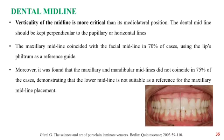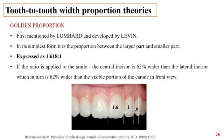The reference points for assessing the midline are the glabella, tip of the nose, tip of the chin, and the philtrum of the lip, which is the most accurate. The various tooth width proportion theories include golden proportion, christian proportion, recurrent aesthetic dental proportion, and special proportions. The golden proportion was first mentioned by Lombard and developed by Levin. It states that the central incisors are 62% wider than the laterals, which in turn are 62% wider than the canines. The golden proportion ratio is 1.6 : 1 : 0.6.